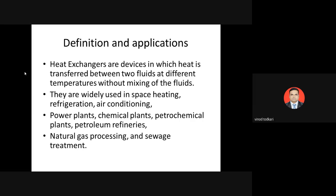Let's take a simple example: the household refrigerator. At the back side of the refrigerator there are black coils called condenser coils, which are one type of heat exchanger. Similarly, the condenser in a window air conditioner outside the room is also an example of a heat exchanger.